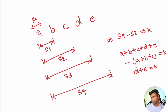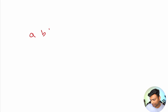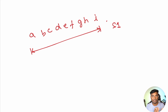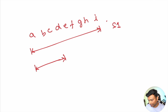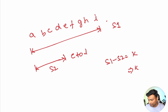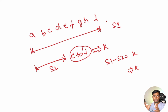So for any array, if you know the total sum s1 and the prefix sum s2 from index 0 to some index d, and s1 minus s2 equals k, then you have a subarray from e to the end whose sum equals k. We will use this technique to find our solution. Let's dry run on example 3.